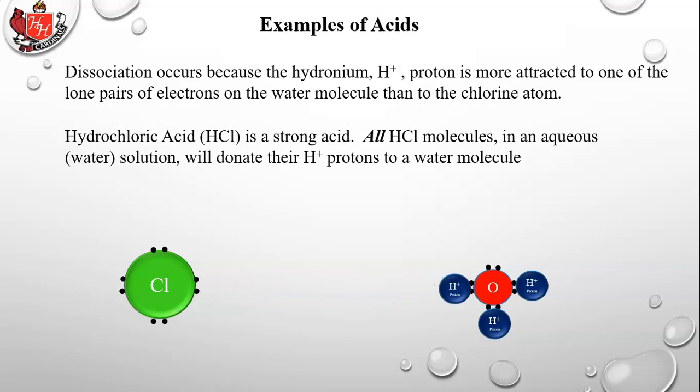One question is: when that proton jumps over and attaches to the lone pair, does that become a covalent bond? The other two hydrogens on the water molecule are covalently bonded — but my belief is it is only an intermolecular force holding that third H+ onto the water molecule. It can easily break away and go to some other base, so it's held by an intermolecular force, not an actual covalent bond, yet it's still considered to be an H3O ion.